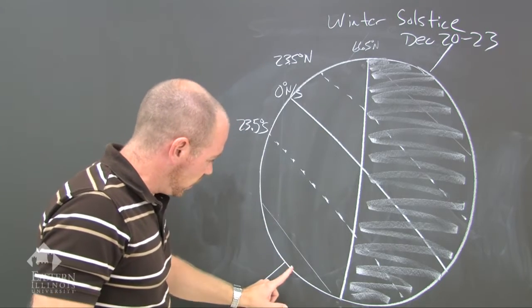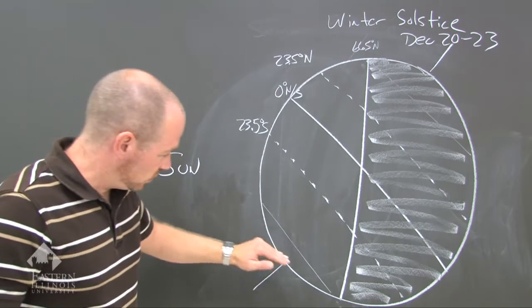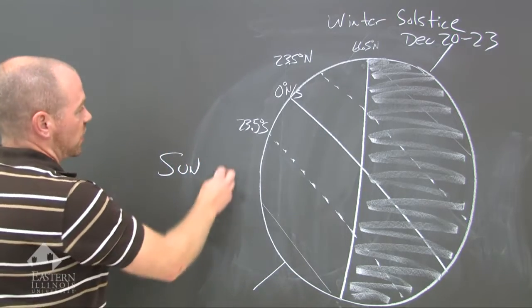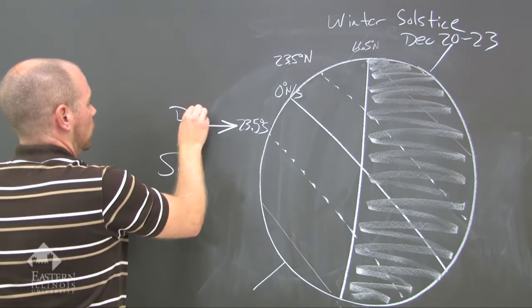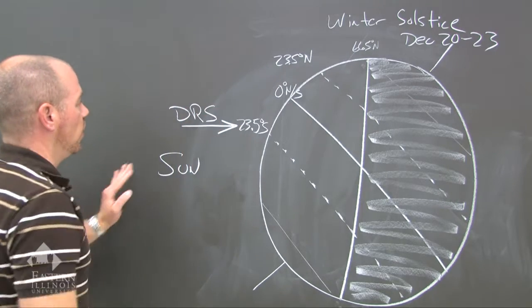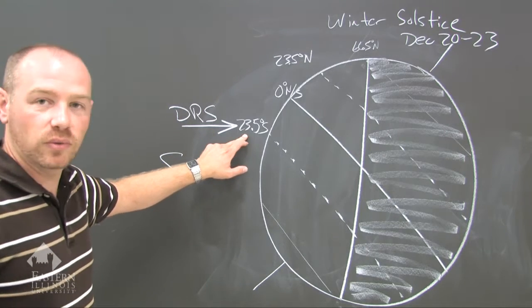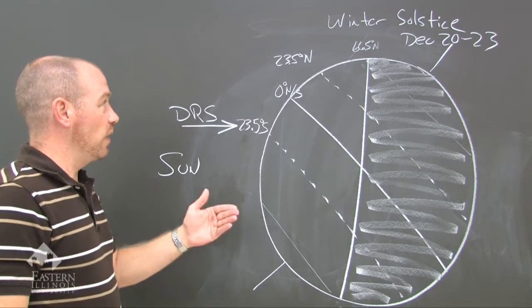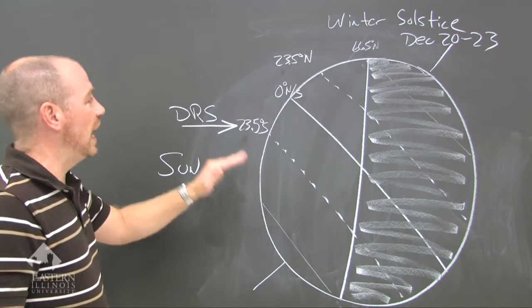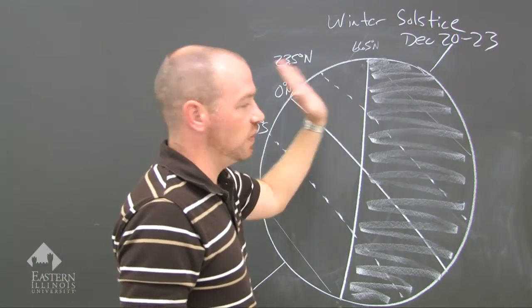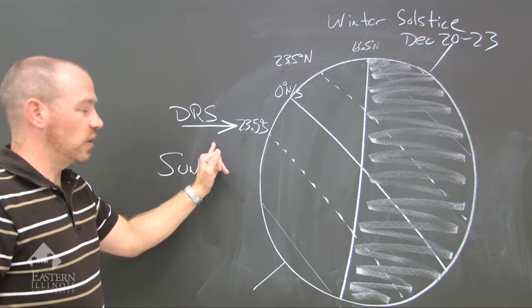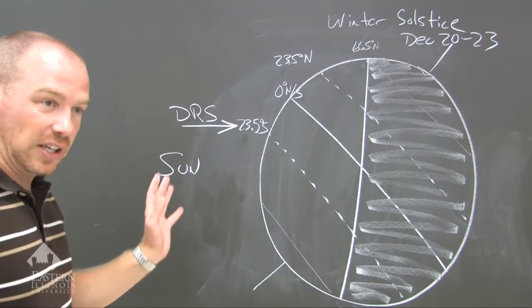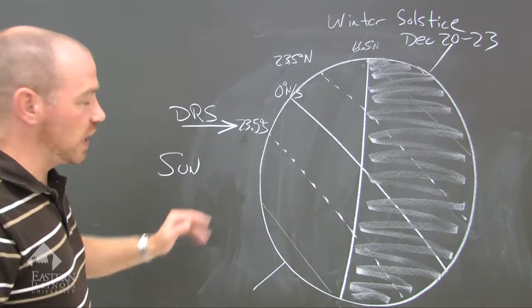Opposite of that, we get the south pole in light — 24 hours of daylight. The direct ray of the Sun is now at 23.5 degrees south. In summer, the direct ray of the Sun was 23.5 degrees north. Now, because the northern hemisphere is pointed away from the Sun, the direct ray of the Sun is at 23.5 degrees south. So those are the two extreme seasons and their solar declination.